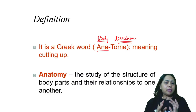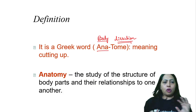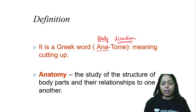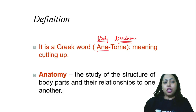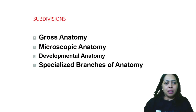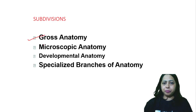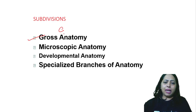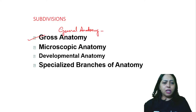Anatomy is the study of the structure of various body parts in relation to other body parts. For example, if you have the heart in the center of the mediastinum, on the right and left sides you have the lungs. When describing the heart, you say there is a right lung and left lung, and in the center you have the heart — that is the relation of the heart.